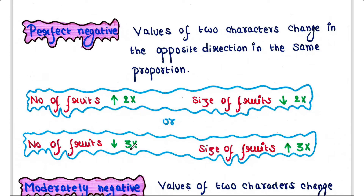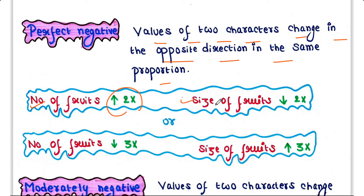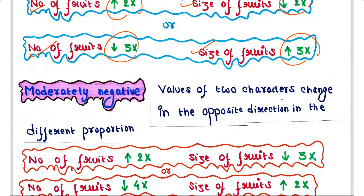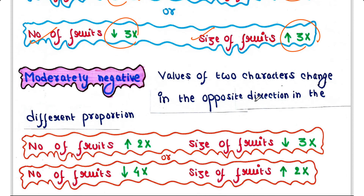Negative correlation could be of two types: perfect negative and moderately negative. Perfect negative correlation is when the values of two characters change in the opposite direction in the same proportion. In our case, number of fruits is increased two times and size of fruits is decreased two times, or else number of fruits is decreased three times and size of fruits is increased three times.